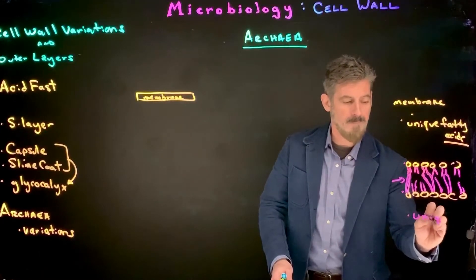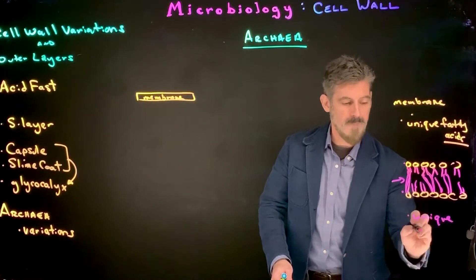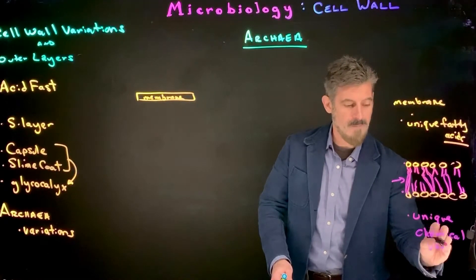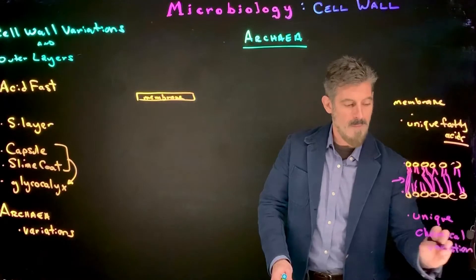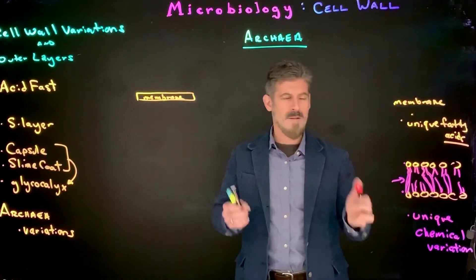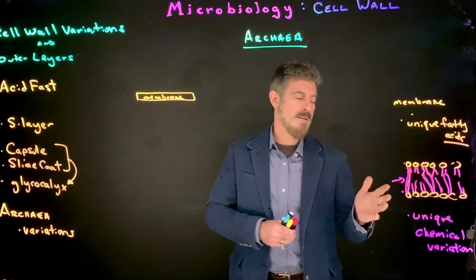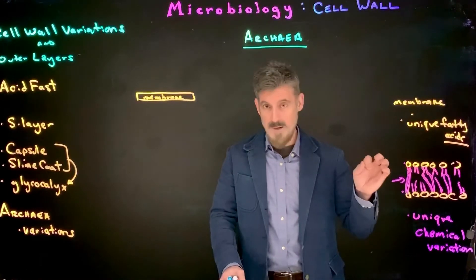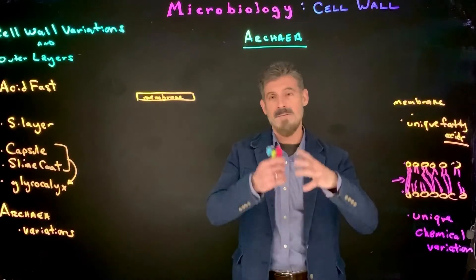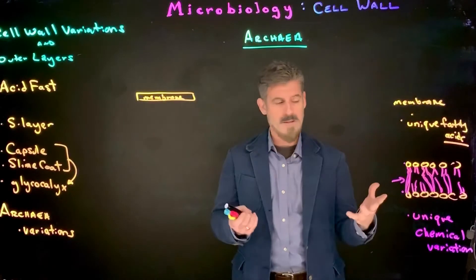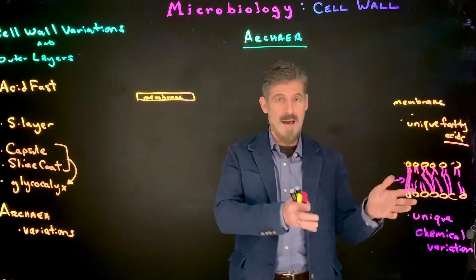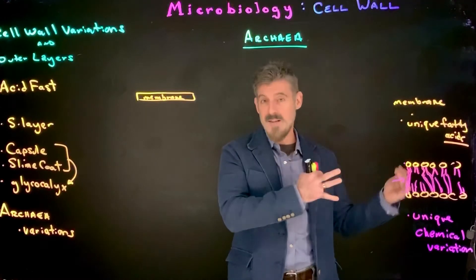There's some unique chemical variation. But when people sometimes say they don't have that, or it's something totally different, they're really talking about it at a very specific chemical level. In general, if you understand the basic idea of what a cell membrane is — the phospholipids, the bilayer, and the organization — they have that, but then they have something slightly different.